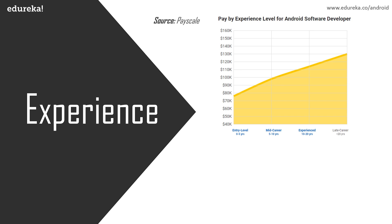Take a look at this graph. An entry-level Android developer salary is close to 76,000 US dollars per year on average. This is excluding the bonus and overtime pay. So 76,000 dollars is a high amount of money you're going to be earning as an entry-level Android developer.